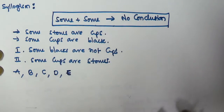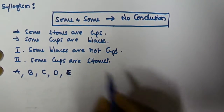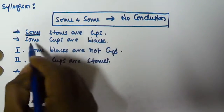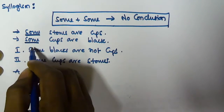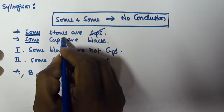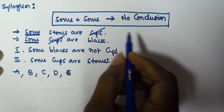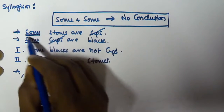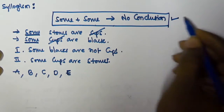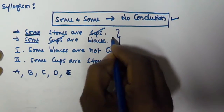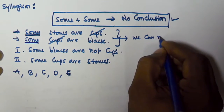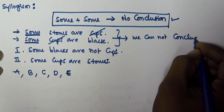If both are true, we select option E. Now if you see here, the first solution is starting with 'some' and the second solution is also starting with 'some,' and the predicate of the first one is equivalent to the subject of the second. According to the rule of some plus some, it is going to give no conclusion, so we cannot conclude anything from these two syllogisms.